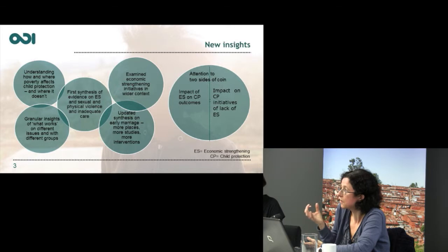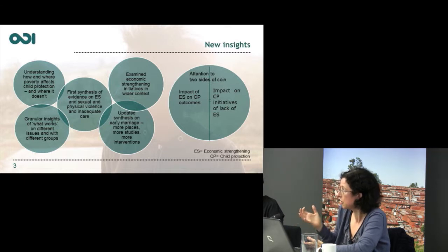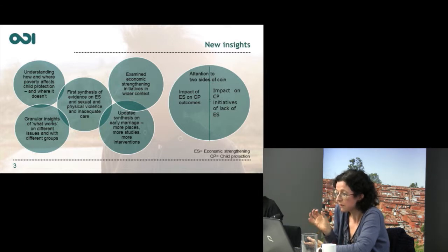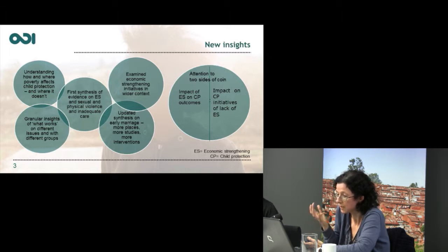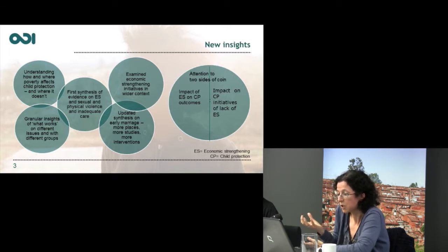Unlike many systematic reviews that look at one thing and see whether it's good or not, we tried to compare economic strengthening initiatives with other kinds of initiatives. That was methodologically difficult to do, but it did mean that we were able to contextualise and put the economic strengthening insights in a set of wider policies. As far as we're aware, we have done the first synthesis on the impact of economic strengthening programmes on sexual and physical violence against children and inadequate care, and we've added to the range of studies covered in synthesis of the impact of economic strengthening on early marriage, generating some granular insights of what works on different issues and with different groups.